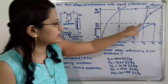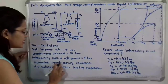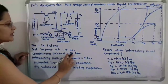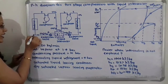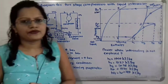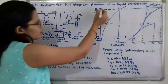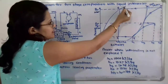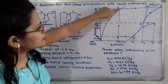It is given that saturated liquid leaves the condenser. The condenser pressure is 10 bar, so at point 5 the refrigerant is leaving the condenser as saturated liquid. To find point 5, we locate the 10 bar pressure line and find the intersection with the saturated liquid line. That intersection is point 5.